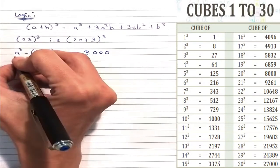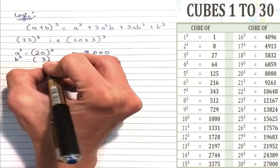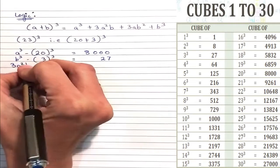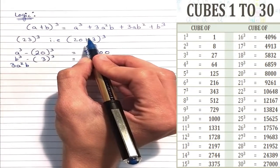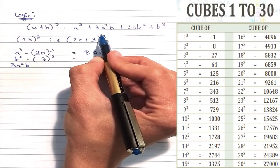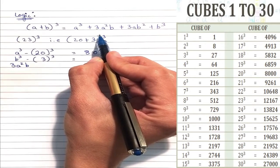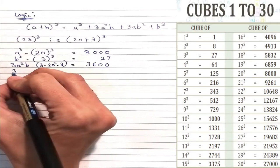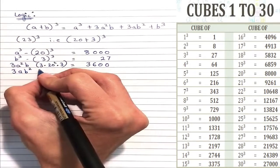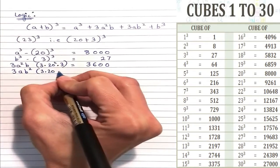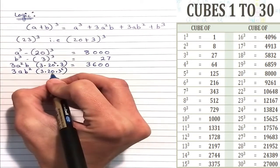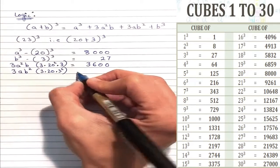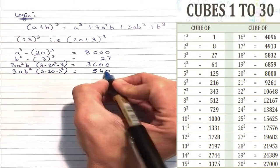Let's simplify this. So a³ will be 20³, which is 8000. b³ will be 3³, which is 27. Now 3a²b: so 3 multiplied by 20² into 3, which will be 3600. And 3ab² will be 3 multiplied by 20 into 3², which will be 540.